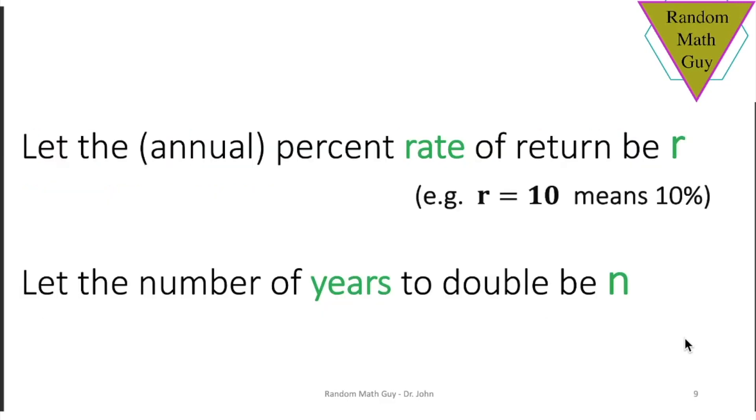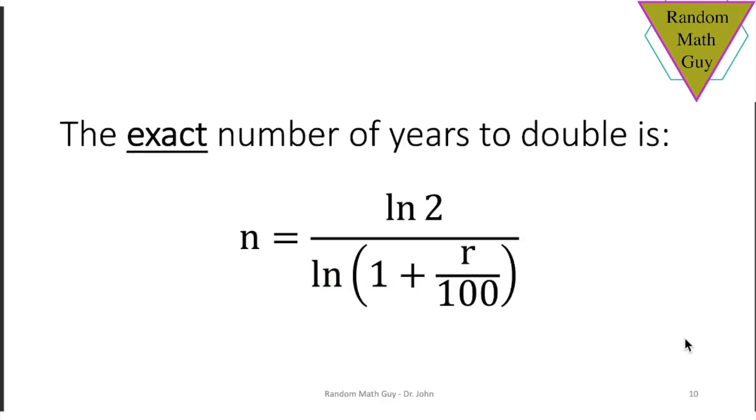For this, I'd like to first declare that the rate of return will be R. Now R is in percent, so when I say R is 10, for example, I mean 10%. Let N be the number of years that it takes to double the money exactly. So if you work it out based on the compound interest formulas, you get this equation here.